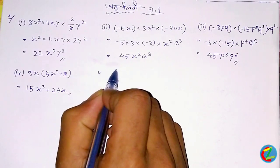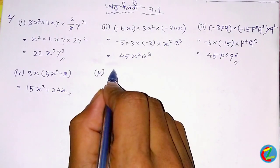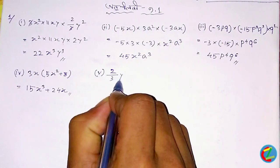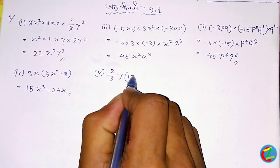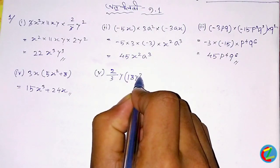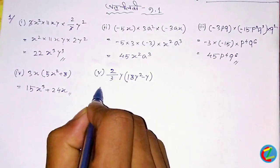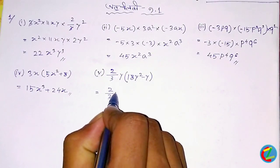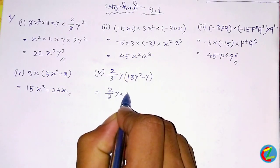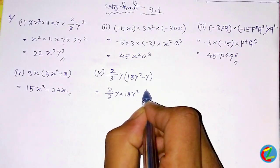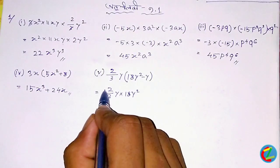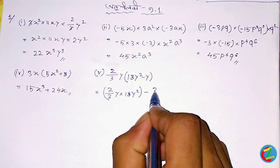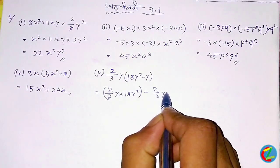Now the answer is 2 by 3y into 18y squared minus y whole. 2 by 3y equals 18y squared minus 13y squared plus y squared, plus y squared plus y squared.